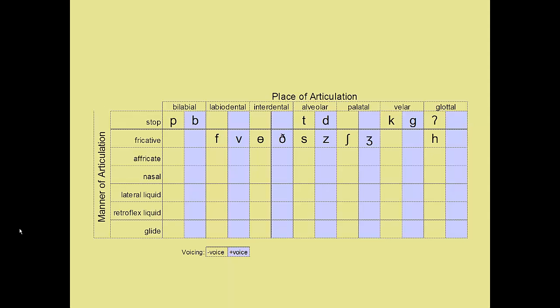The next row is the fricatives. In this case, you see some new symbols that don't correspond to our English alphabet. A fricative is produced with only a partial closing of the vocal tract — the airstream doesn't stop completely as in the stops. Instead, the sound is produced by the turbulent airflow. The next row contains the two English affricates. These sounds can be thought of as a combination of a stop and a fricative. I'll demonstrate all the sounds for you shortly.